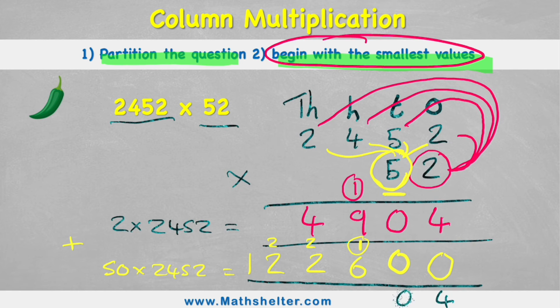In the tens column, 0 and 0 is obviously 0. Hundreds, 9 add 6 is 15. Carry the one across. Put a 5. In my next one, 4 add 2 is 6, plus my 1 is 7. In my ten thousands, 2 add 2 is 4. Sorry, I'm having to write over the Math Shelter logo. And in my hundred thousands, I have a 1 on its own. So my answer to 2,452 times 52 is 147,504.